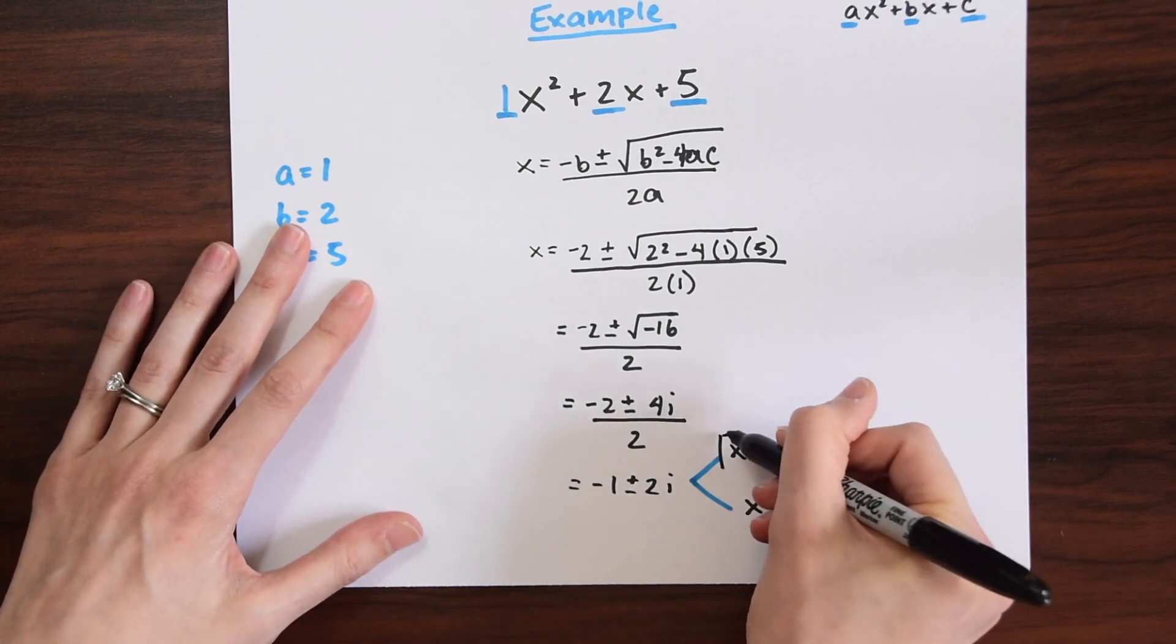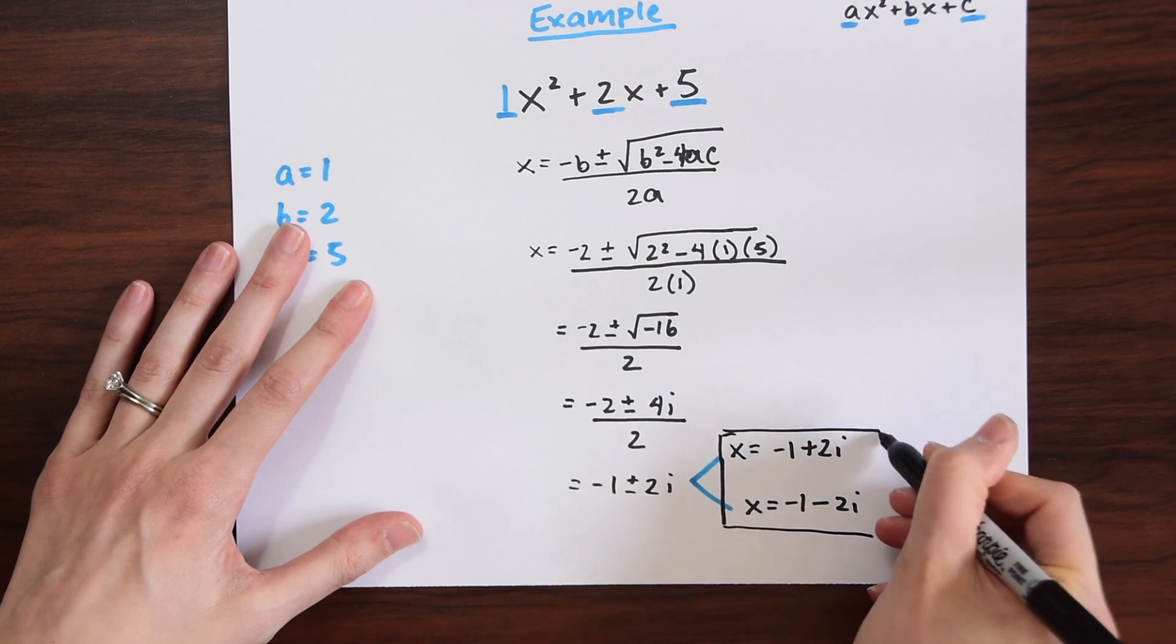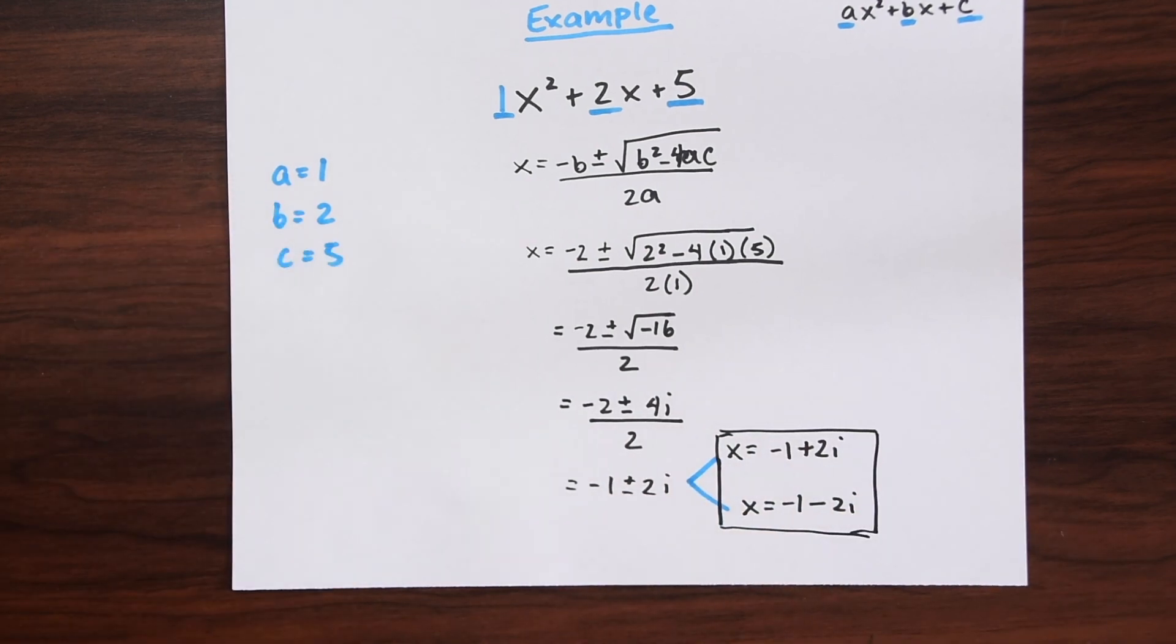So that's our answer. We get x equals negative 1 plus 2i and x equals negative 1 minus 2i. We have both of those answers as a solution to our question.